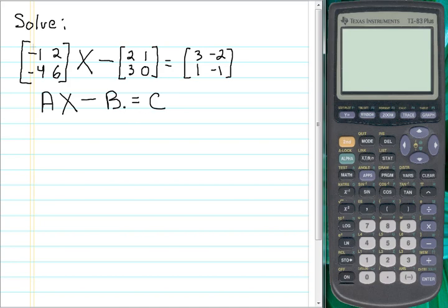Now like regular algebra, we will be wanting to get this matrix by itself so that we can solve. So to do that we need to add B to the other side. So we're going to add B to both sides of the equation. So now we have AX equals C plus B.